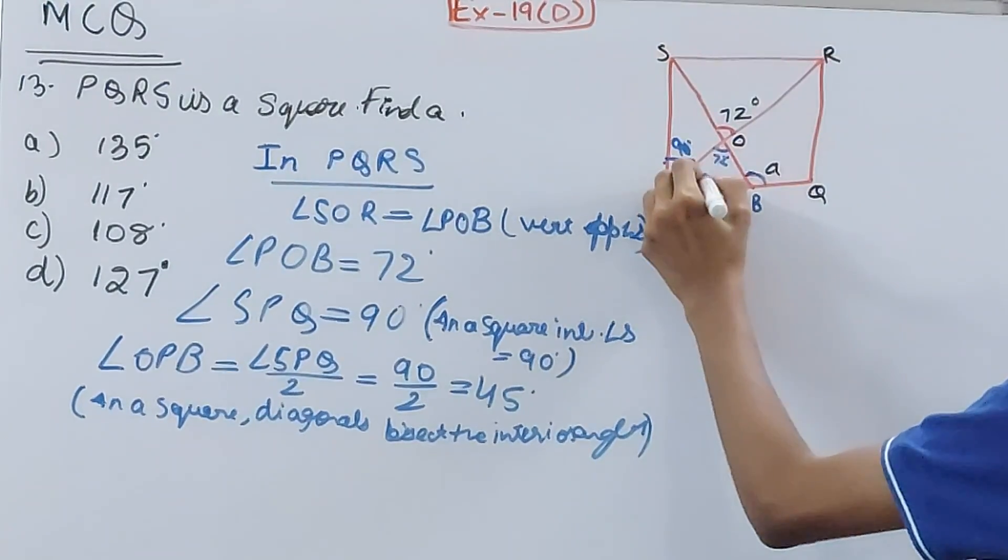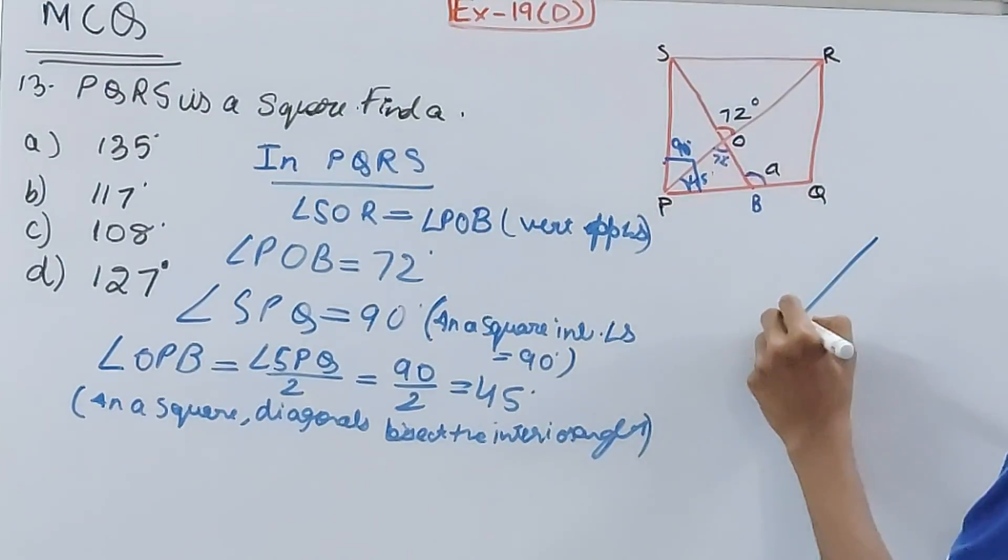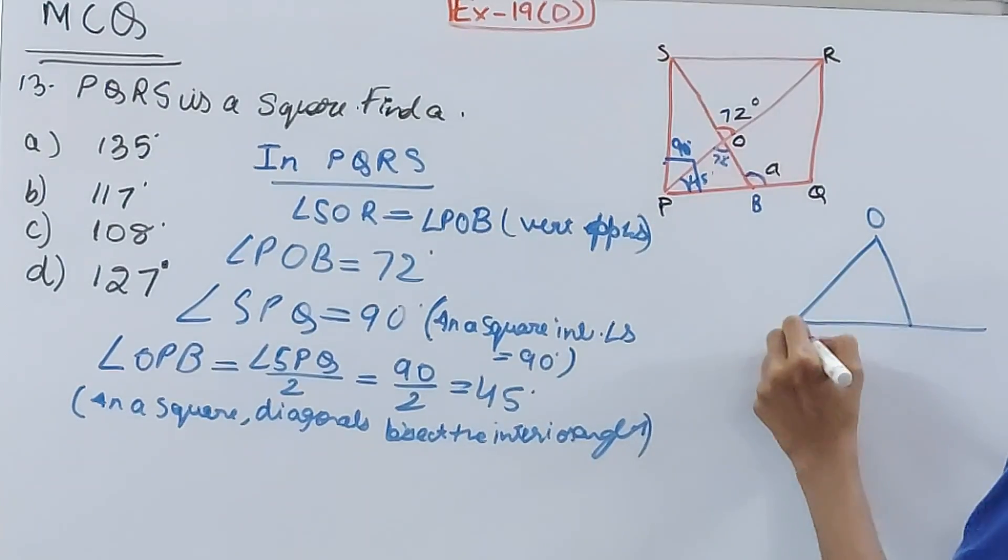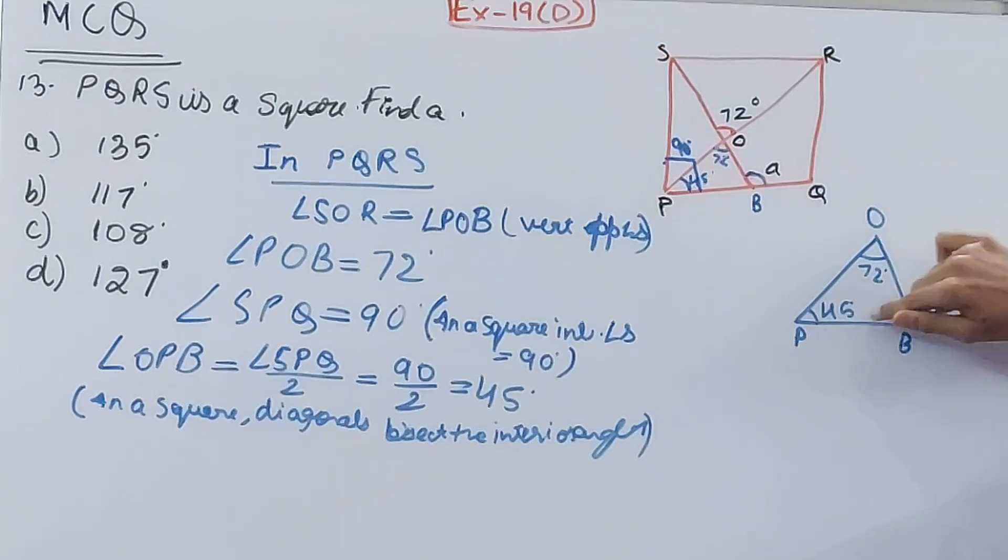Let's make the figure even better so we have a better understanding of this. OPB, this is angle a, this is 45 degrees, and this is 72 degrees.